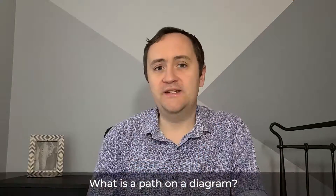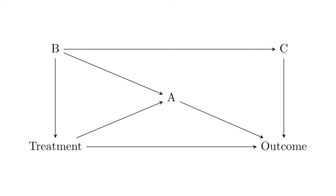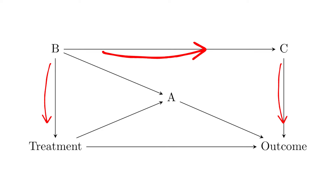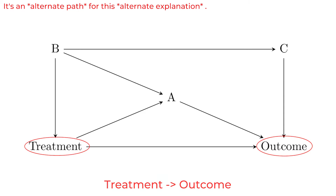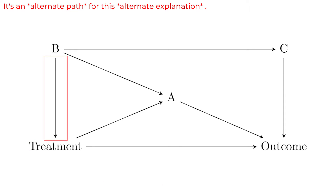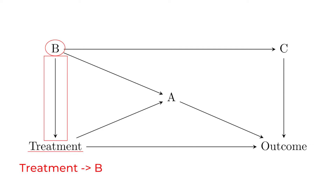So what is a path on a diagram? A path is any way that you can walk along the diagram from one variable to another. For example, we can go from treatment to B to C to outcome — that is a path that gets us from treatment to outcome, and it is a reason why we might see those two variables being related other than just treatment causing the outcome. You can also go back up an arrow when talking about a pathway — the arrow goes from B to treatment, but you can still say the path goes from treatment to B.